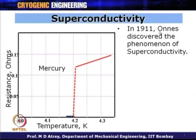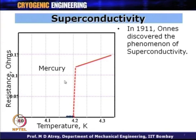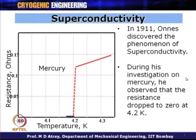In 1911, Kamerlingh Onnes from Holland discovered the phenomenon of superconductivity. He used mercury, and when mercury's temperature was decreased to 4.2 Kelvin, its resistance suddenly became equal to zero. He understood that properties had drastically changed for mercury — mercury had become superconducting as its resistance became zero at 4.2 Kelvin. During his investigation, he observed that resistance dropped to zero at 4.2 K, so the critical temperature Tc of mercury is 4.2 Kelvin.